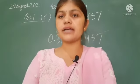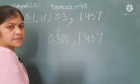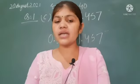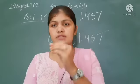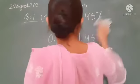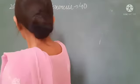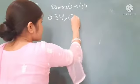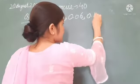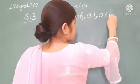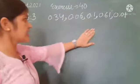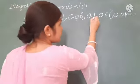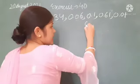The second question asks which number is bigger and which is smaller — you will solve that yourselves. Similarly, the third and fourth questions follow the same approach. Question three is about ascending order — ascending order means smallest first, then the next bigger, and so on up to the biggest. Here the numbers are 0.34, 0.06, 0.1, 0.61, 0.01. First, make them like decimals — 0.1 becomes 0.10.